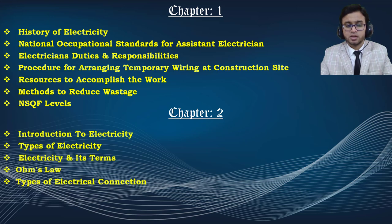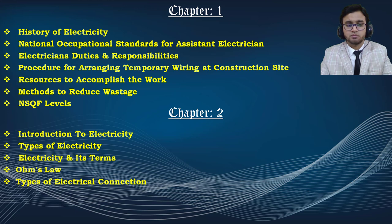Chapter 2 also covers electricity and its terms, including basic definitions: what is meant by voltage, what is meant by current. We also cover Ohm's law, and the types of electrical connections — the two different types being series connections and parallel connections.